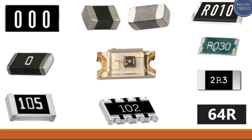For this one we have R030, so its value is 0.03 ohms. The 'R' here refers to a decimal point. This resistor here is basically a general purpose resistor.